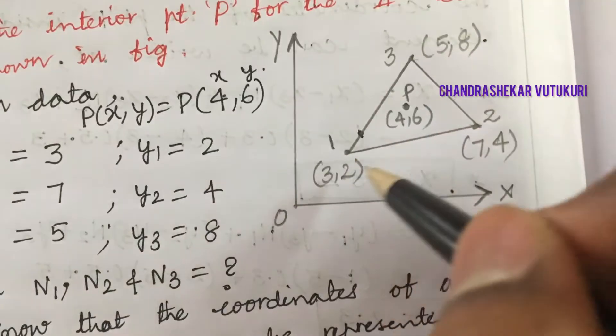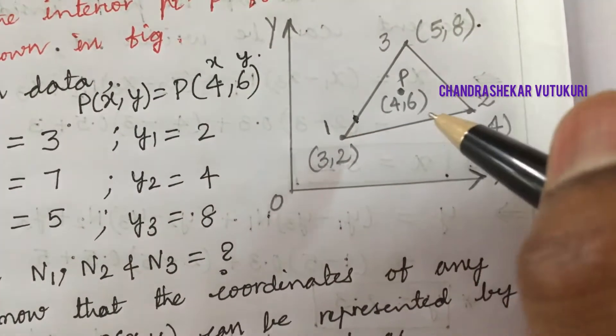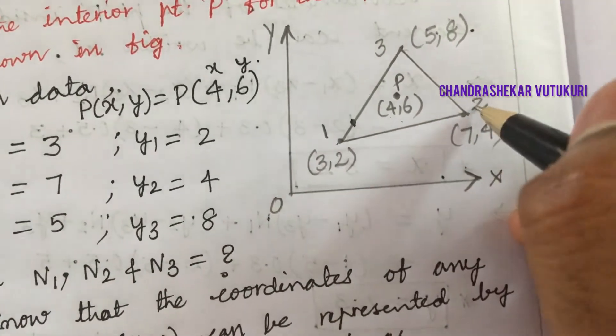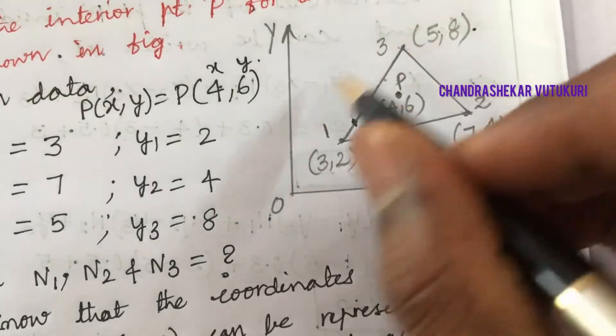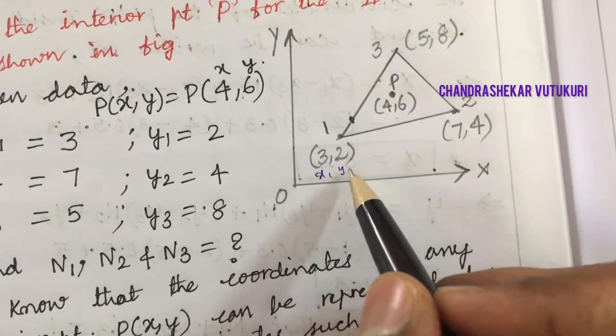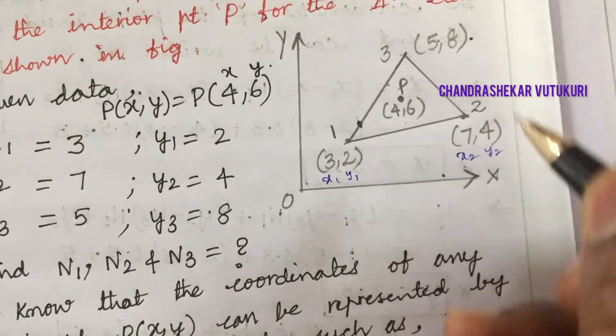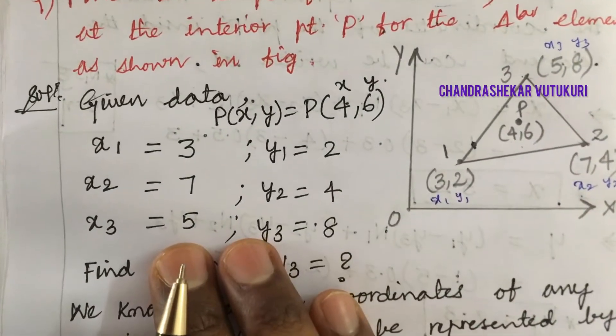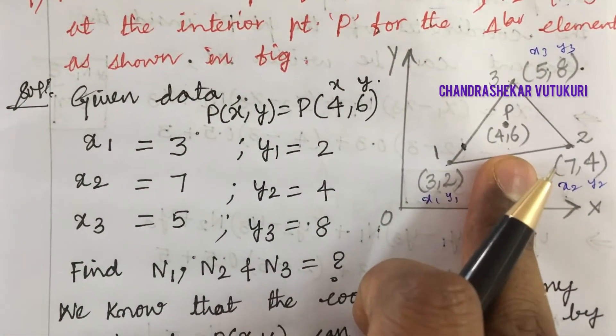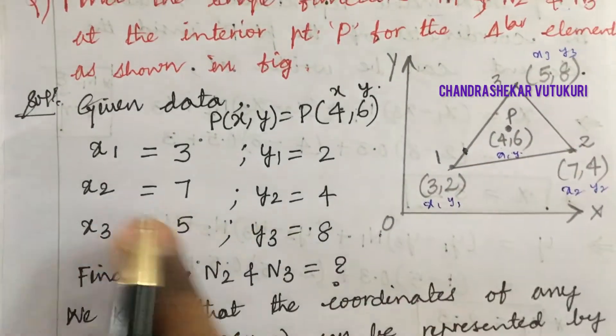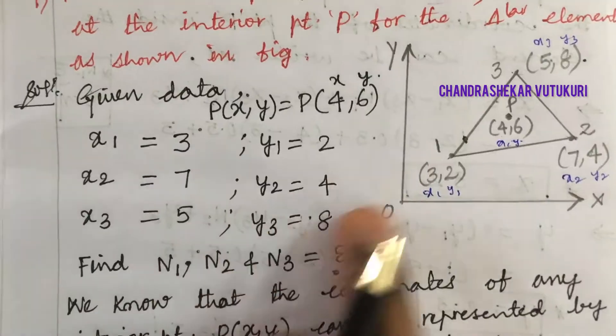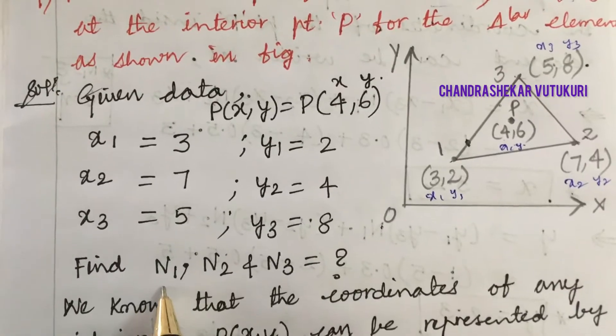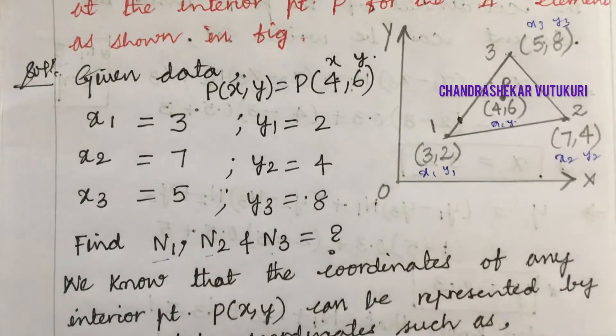Let's look at the constant strain triangle element in the x and y coordinates. Point P(x,y) is given, as well as nodes 1, 2, and 3 with their coordinates. Once these details are given, you should write the given data clearly: P(x,y) = (4,6), and x1 to x3 and y1 to y3 coordinates are also given. We need to work out the shape functions N1, N2, and N3.